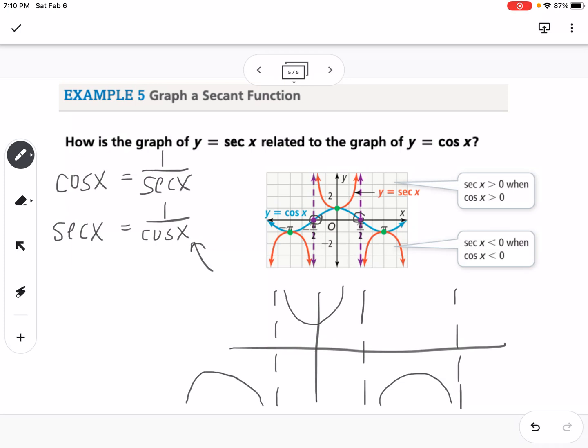And you can graph these in Desmos to kind of get a feel for what they actually look like. My sketches are not great. But it gives you an idea of our tangent, secant, cosecant will also be like this because it's also a reciprocal and cotangent. So all of those you can graph in Desmos to kind of explore what those are going to look like.